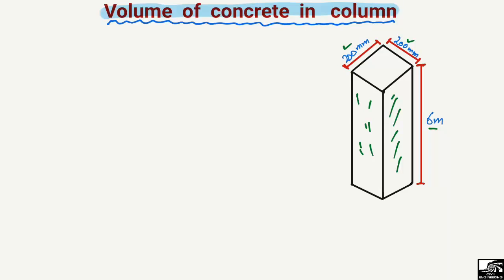To find out the volume of concrete, or the quantity of concrete in the column, we should know how to find it. First, we should know: Volume is equal to the area multiplied by the height. So we need two things — first is the area of the column, and second is the height of the column.